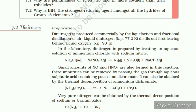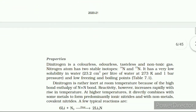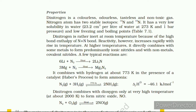7.3 Ammonia. Preparation: Ammonia is present in small amounts in air and soil where it is formed by decay of nitrogenous organic matter, for example urea. On a small scale ammonia is obtained from ammonium salts which decompose when treated with caustic soda (sodium hydroxide). On a large scale ammonia is manufactured by Haber's process. In accordance with Le Chatelier's principle, high pressure favors the formation of ammonia. The optimum conditions are a pressure of 200×10⁵ Pa, a temperature of about 700 K, and use of a catalyst such as iron oxide with small amounts of K₂O and Al₂O₃ to increase the rate of attainment of equilibrium.